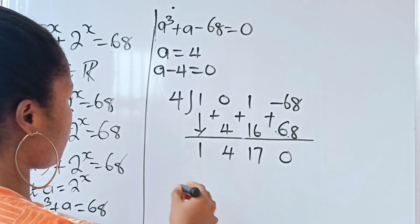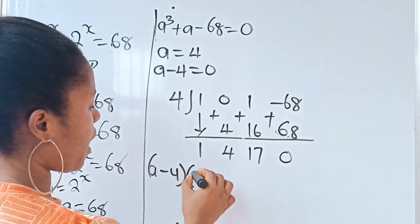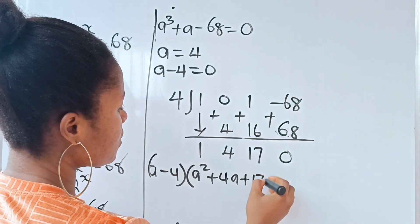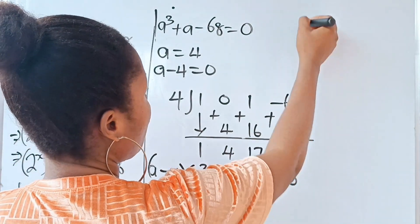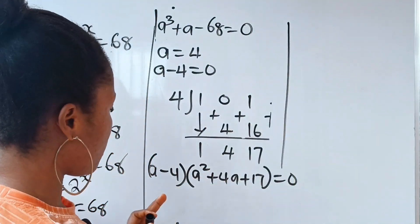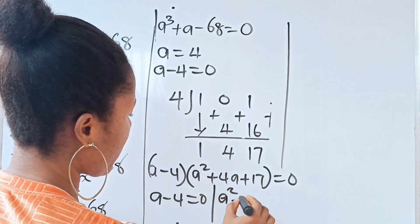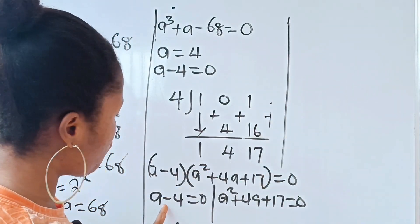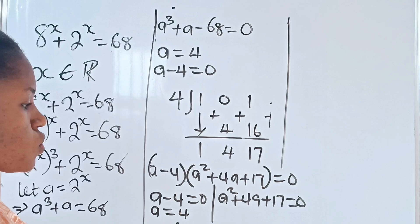So the factors we have are: (a minus 4) multiplied by (a squared plus 4a plus 17) equals 0. From here we can see that a minus 4 equals 0, and a squared plus 4a plus 17 also equals 0. For the first case, a minus 4 equals 0 gives a equals 4.